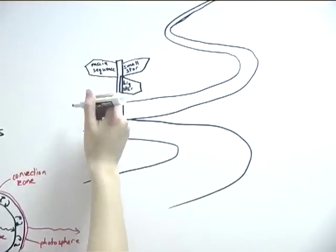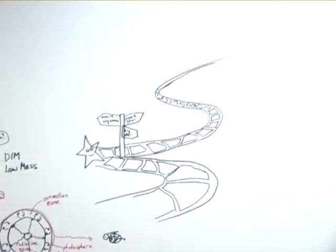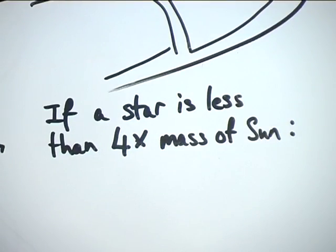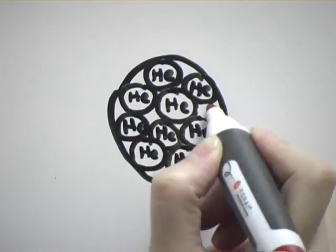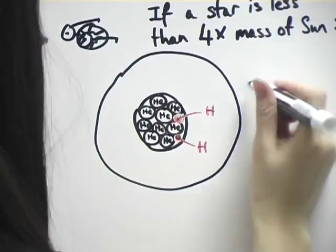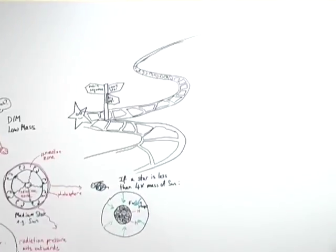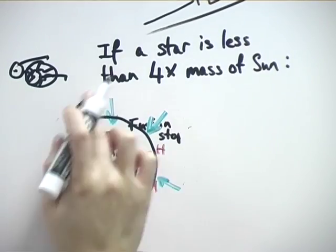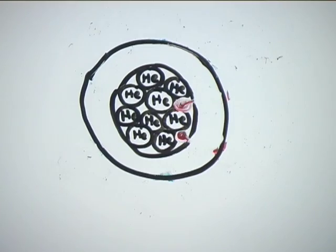If the star is less than four times the mass of the Sun, it is a low mass or small star. Towards the end of the star's life, it begins to run out of hydrogen fuel to fuse together, so nuclear fusion in the core stops. This means that there is no longer anything generating an outward pressure to counteract the gravitational inward pull. This makes the outer layers of the star begin to collapse inwards again.